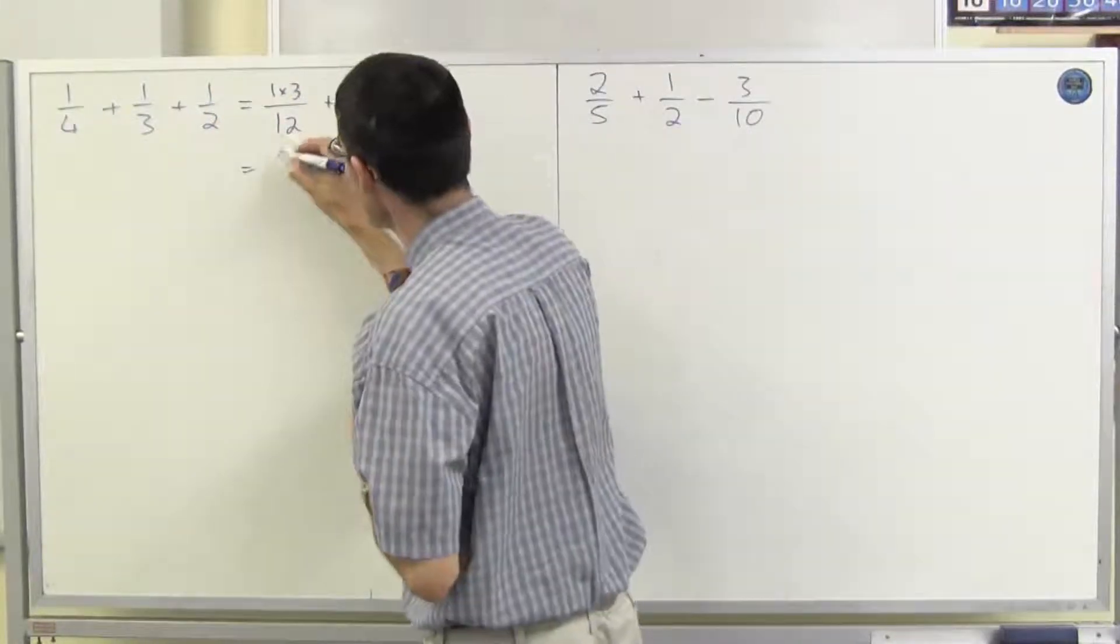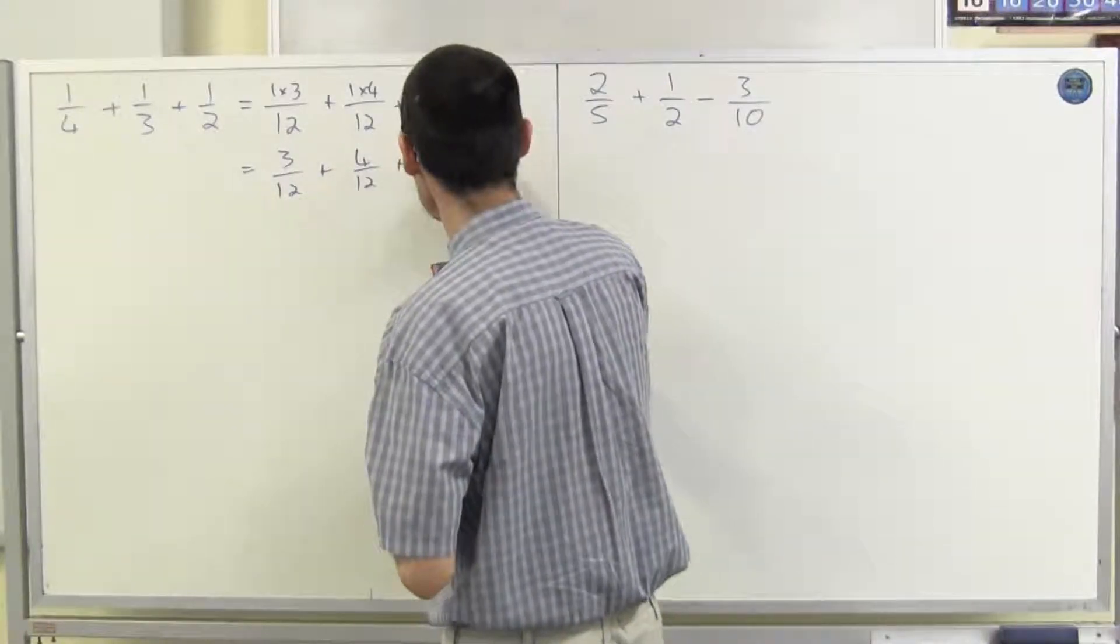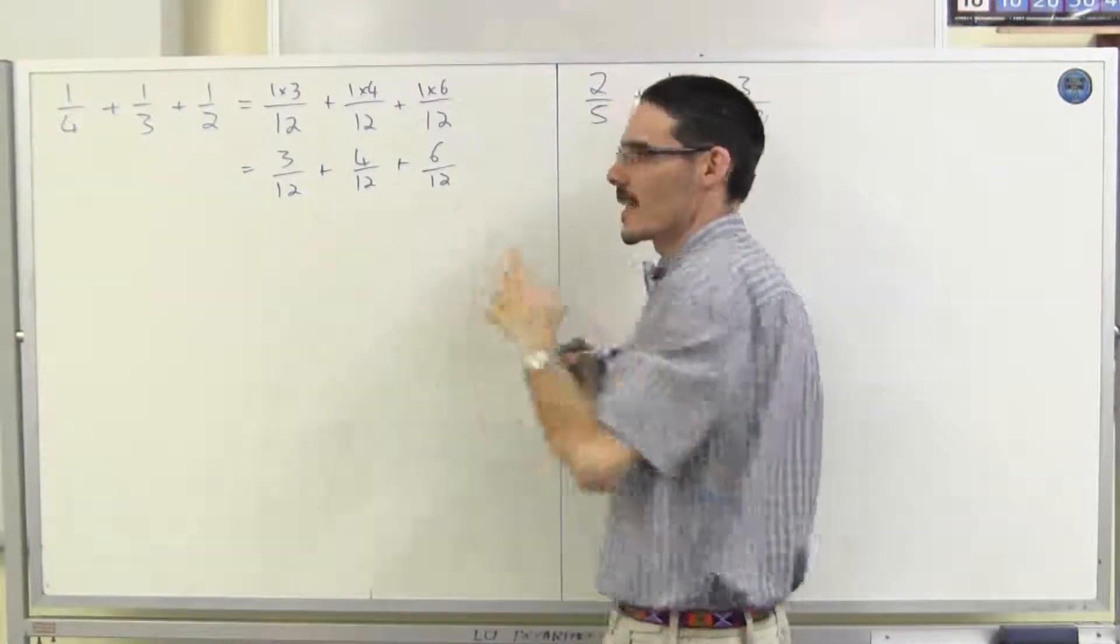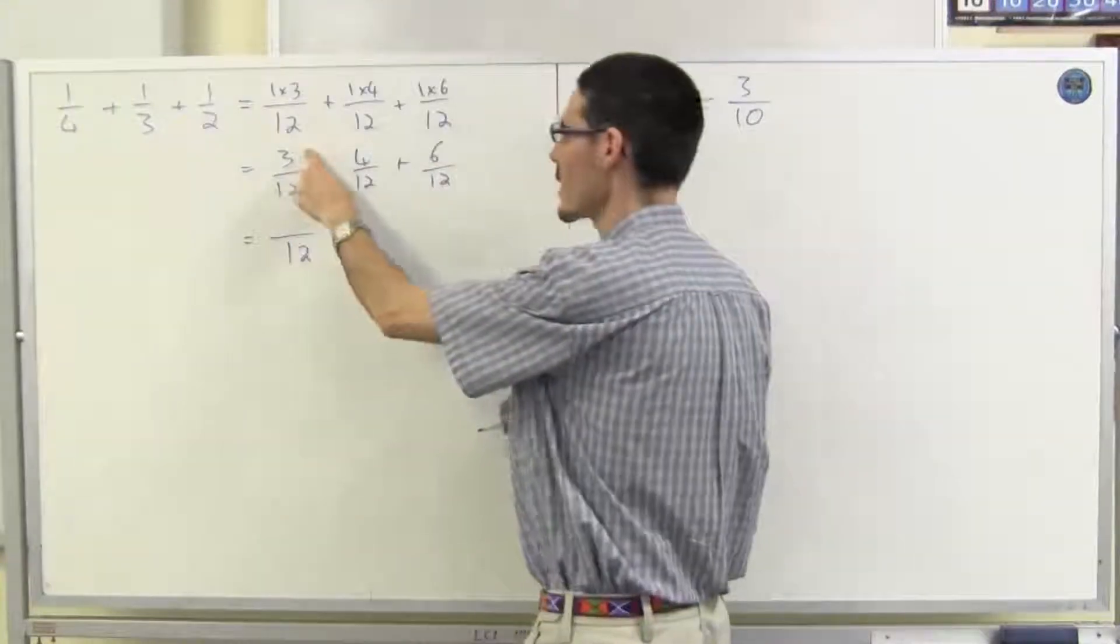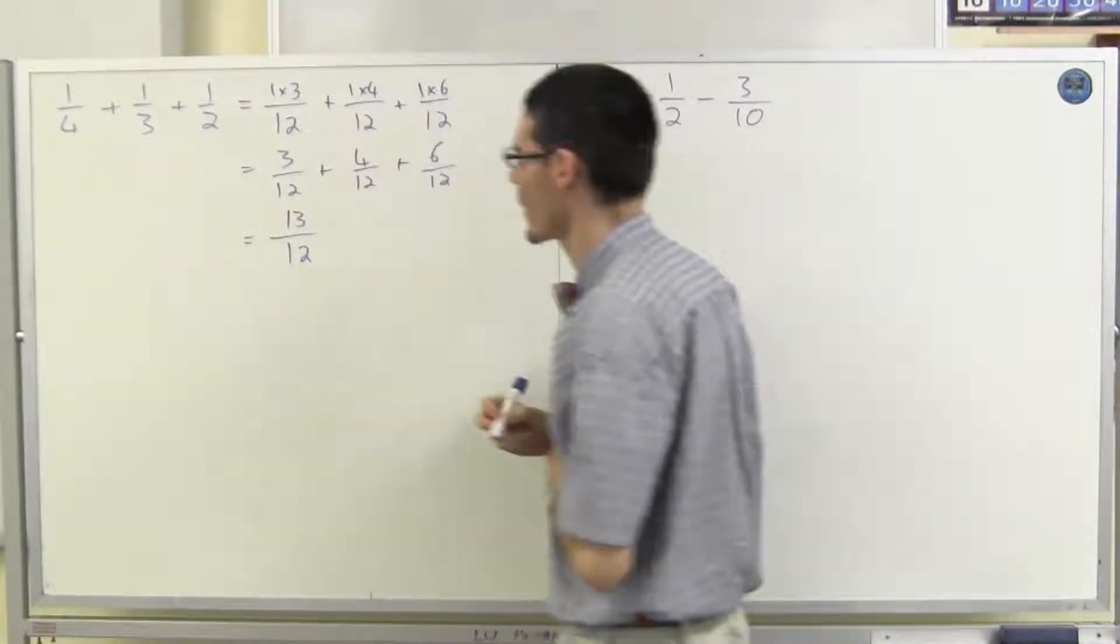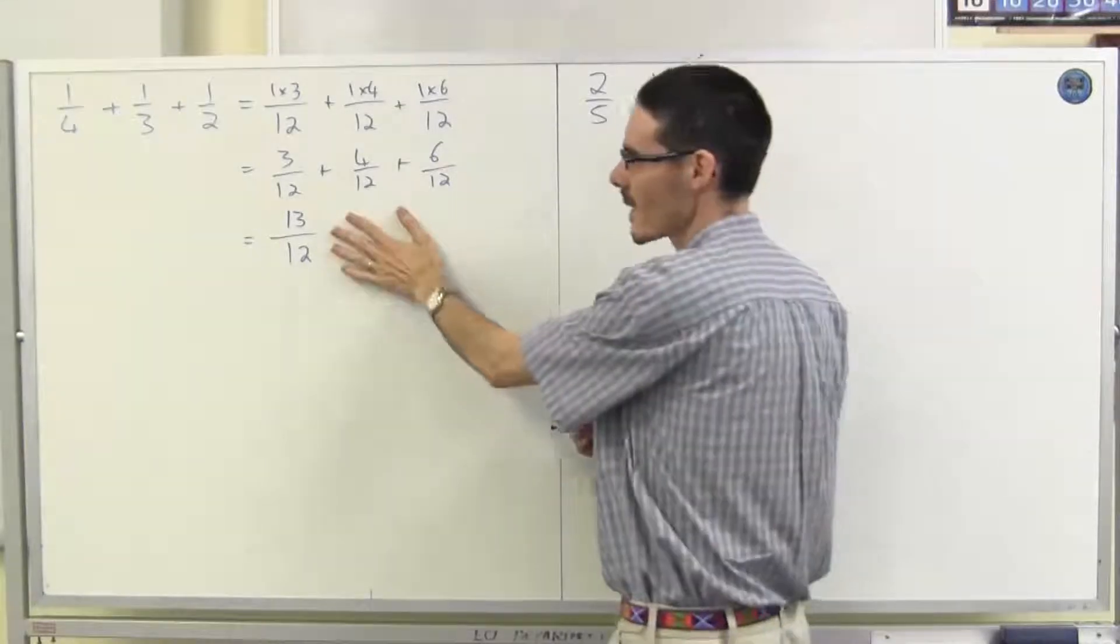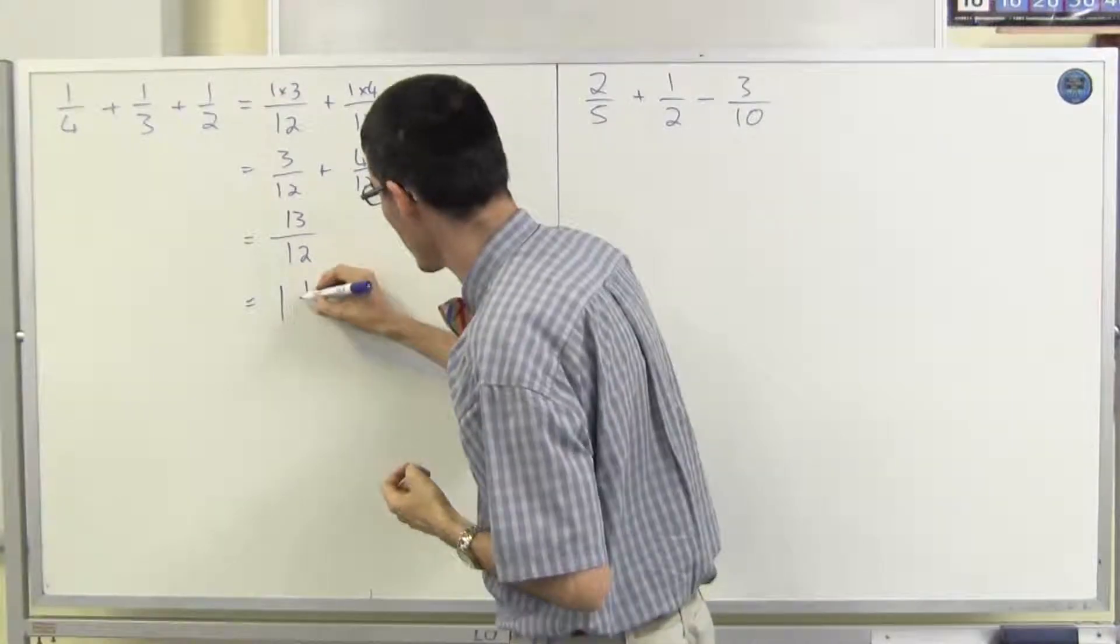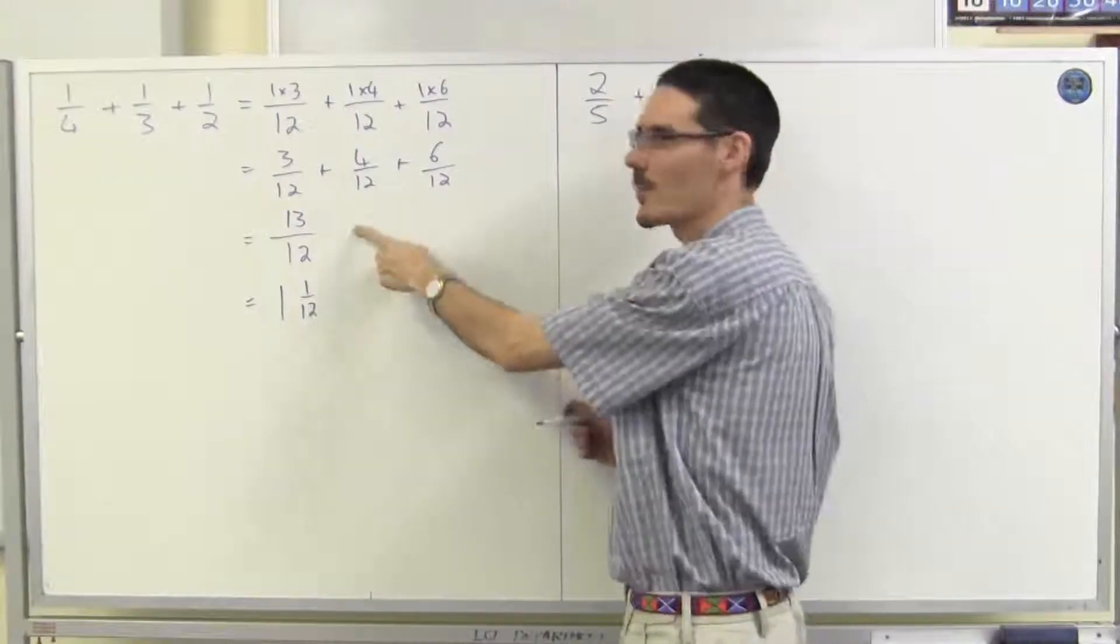Well that's quite straightforward. 3 over 12 plus 4 over 12 plus 6 over 12. Well now I've got 3 that all have the same denominator, so my answer is going to be in 12 and it's going to be 3 plus 4 plus 6. Well that's going to be 13. That's improper but that's fine. You can leave it like that, or if you prefer you can have 1 and 1 twelfth. Both answers are the same. Personally I prefer improper.